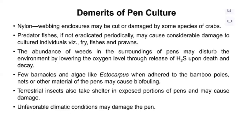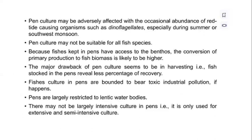The demerits of pen culture include: predator species and abundance of weeds surrounding the pen; barnacles and algae may grow in the culture area; terrestrial insects could be a problem; and unavoidable climatic conditions may damage the pen. Pen culture may not be suitable for all fish species. Because fish kept in pens have access to the benthos, conversion of primary production to fish biomass is likely to be higher. Fish cultured in pens are exposed to toxic industrial pollution if it occurs. Pens are largely restricted to lentic water bodies, and intensive culture is not possible; pens are used only for extensive and semi-intensive culture.